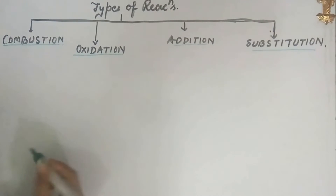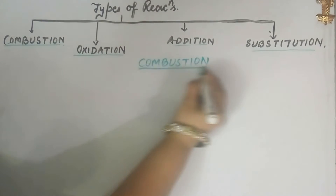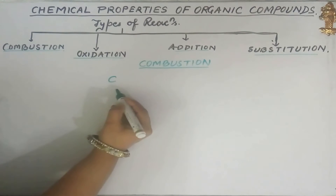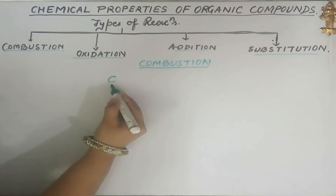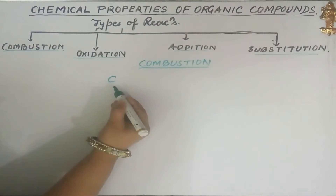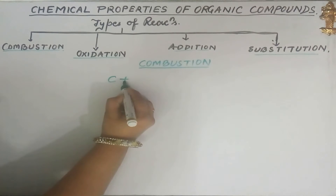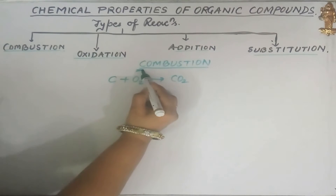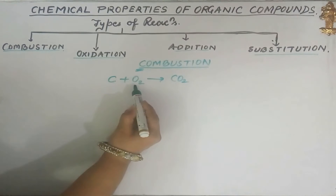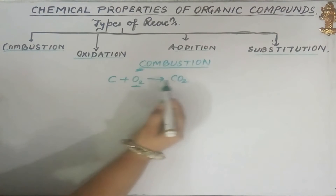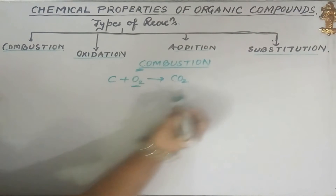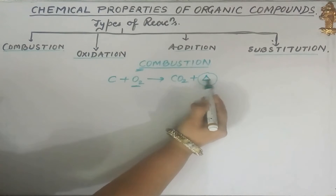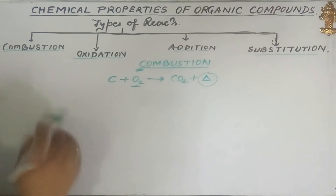Let us start with the combustion reaction. This is a special reaction in which carbon and all its allotropic forms — whether graphite, fullerene, coke, coal, or anything else — when burned in the presence of oxygen, give out carbon dioxide on complete combustion. This reaction is special because it gives out a huge amount of energy in the form of heat and light.